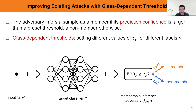For the detailed attack algorithms, first we leverage the prediction confidence for membership inference. We compare the input sample's prediction confidence with a threshold value. If the confidence is larger than the threshold value, we think the input is a member; otherwise we think it's a non-member. Compared to existing attack works, we improve such attack by setting different threshold values for different class labels.